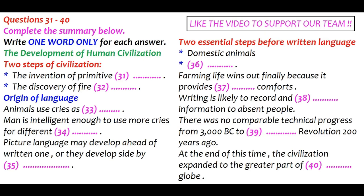I am inclined to think that language has been the most important single factor in the development of man. Two important stages came not so long before the dawn of written history. The first was the domestication of animals. The second was agriculture — a step in human progress to which, subsequently, there was nothing comparable until our own machine age.